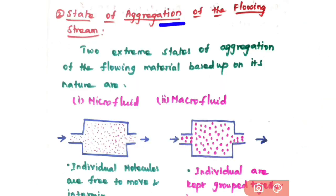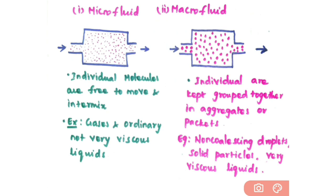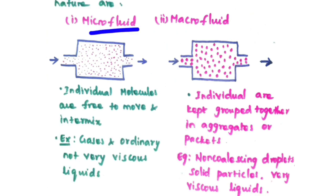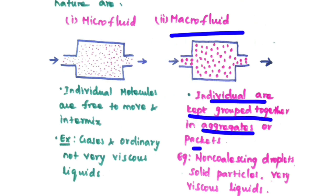The next factor is the state of aggregation of the flowing stream. There are two extreme states of aggregation based on the nature of the fluid: micro fluid and macro fluid. Based on the nature of the fluid, you may have ideal or non-ideal flow. In micro fluid, individual molecules are free to move and intermix. Examples of micro fluids are gases and ordinary, not very viscous, fluids. In macro fluids, molecules are kept grouped together in aggregates or packets — molecules move in the form of packets rather than individually. Examples are non-coalescing droplets, solid particles, and very viscous liquids.